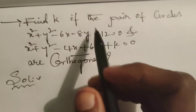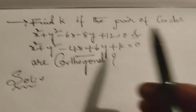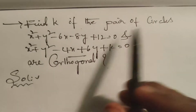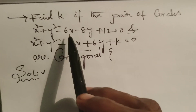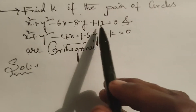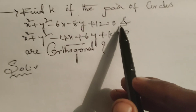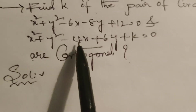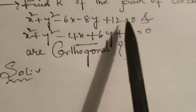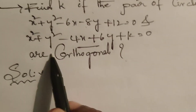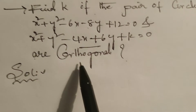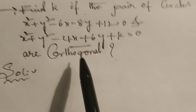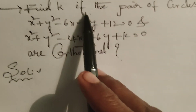Hi everyone, this is Dr. Aethi. Today we are going to explain: find k, where the pair of circles x² + y² - 6x - 8y + 12 = 0 and x² + y² - 4x + 6y + k = 0 are orthogonal. Find the value of k.